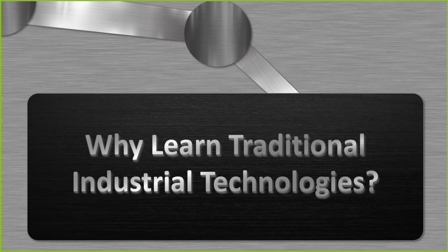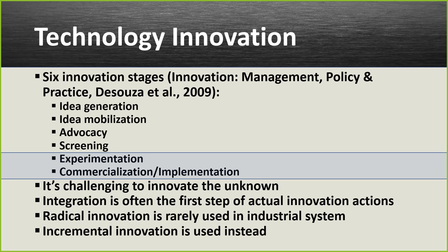Our first topic is why learn traditional industrial technologies in the first place? It really comes down to technology innovation. According to innovation management policy and practice by D'Souza and others in 2009, there are six innovation stages. It begins with idea generation and mobilization, advocacy, screening — choosing the best ideas — and then experimentation and commercialization, which I'm rephrasing as implementation.